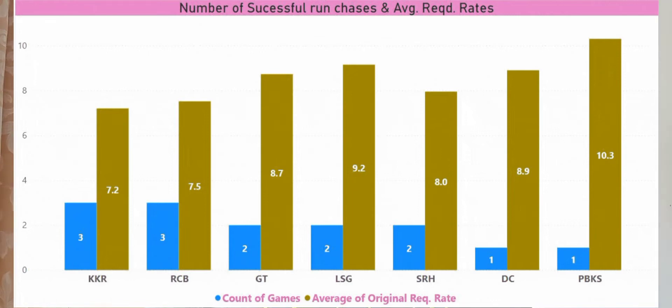And also to call out, Punjab Kings have done a massive run chase of about 200 plus, which is reflecting there in the right hand side of the graph.